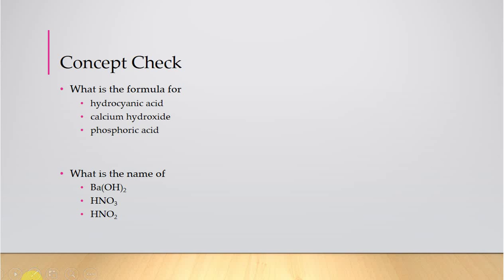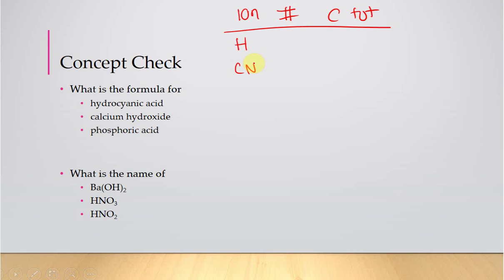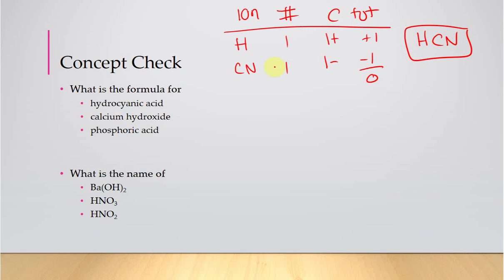For hydrocyanic acid: it's ionic because it's an acid, so it starts with H. Cyan- came from cyanide. H is in group one (+1 charge); cyanide is −1, memorized. To balance, we just need one of each. The formula is HCN — no parentheses because there's only one cyanide.